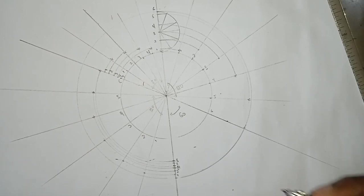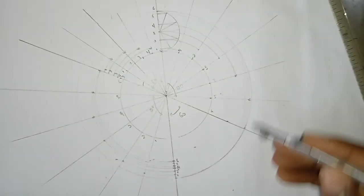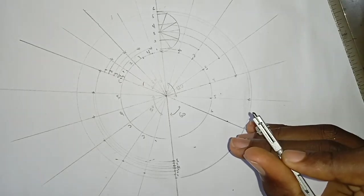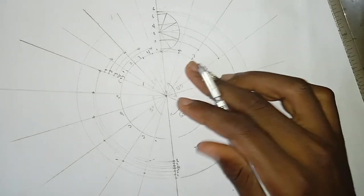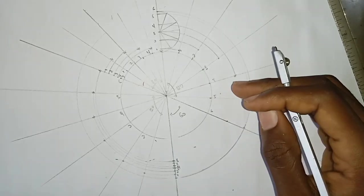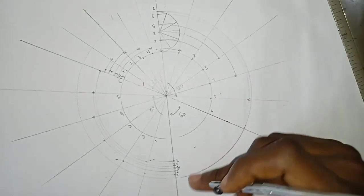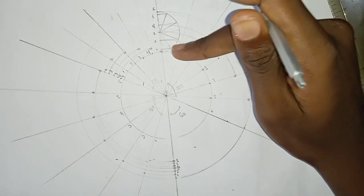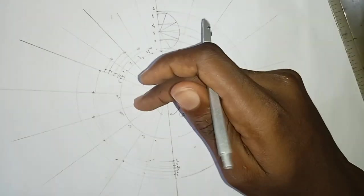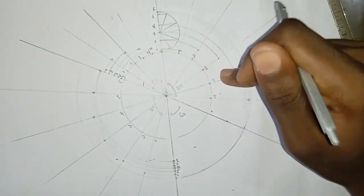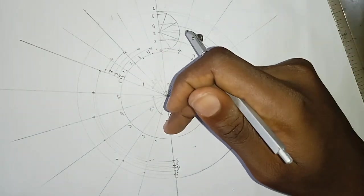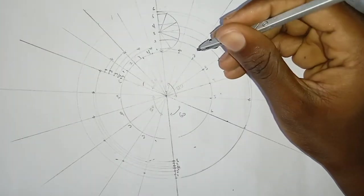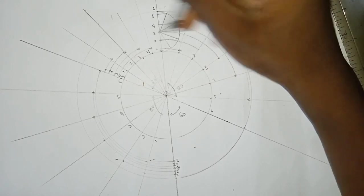And back to the base. And with the nice French curve, I'm going to join all these points together. Now there is one thing. As far as cam profile is concerned, you only divide the part that is in motion. If that part is at rest, you don't divide the part. If you check, this was at rest, that's why you don't divide the part. This is having SHM, rest, uniform decelerating motion, and uniform motion.